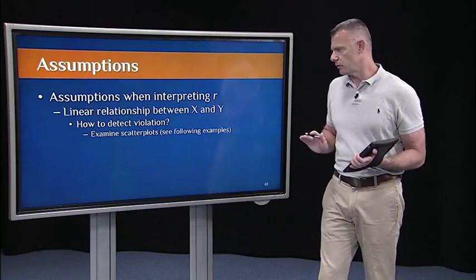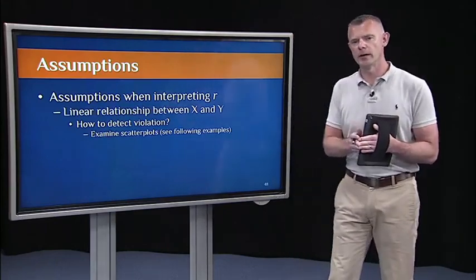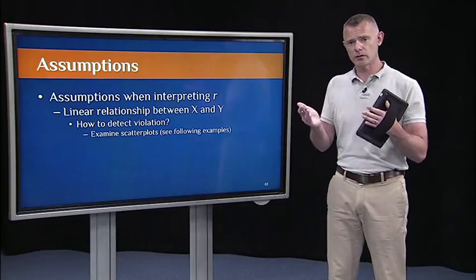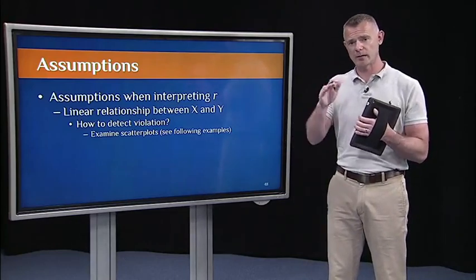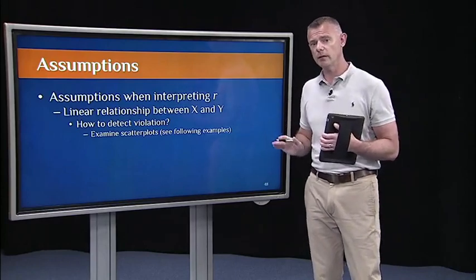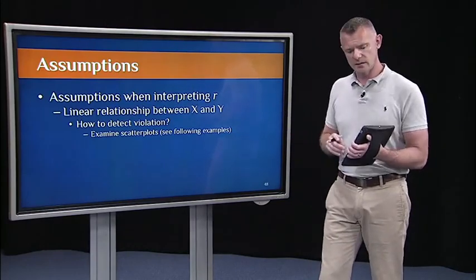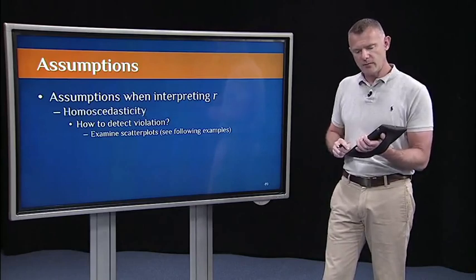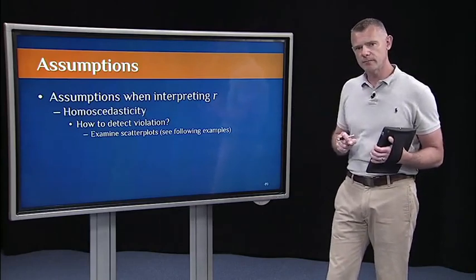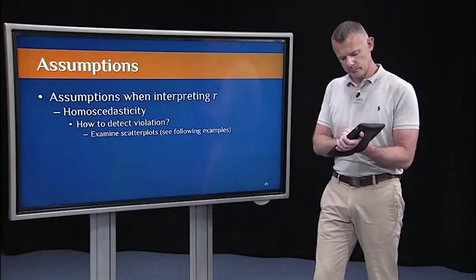The second assumption: for now, we're going to assume a linear relationship between X and Y. Of course, there could be all sorts of relationships between X and Y that are not linear, but for now we'll assume linear relationships, and we'll see that in scatter plots. And finally, there's this assumption of homoscedasticity — let me show you that in a scatter plot.